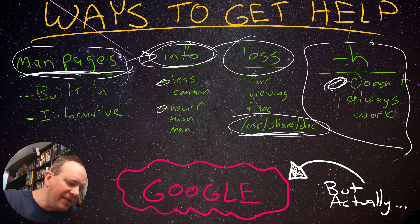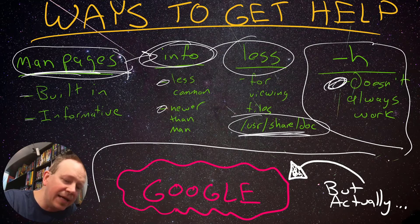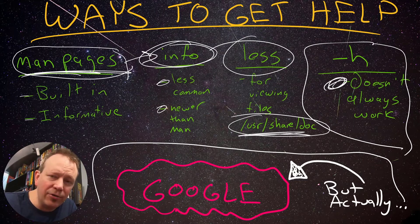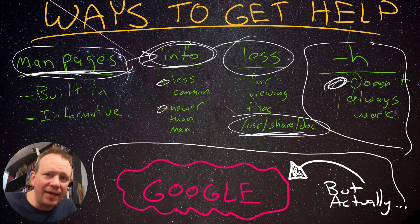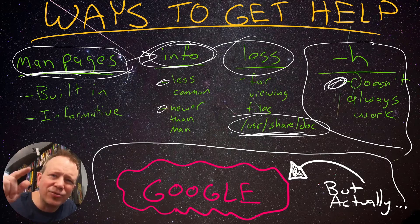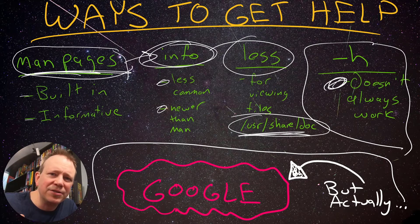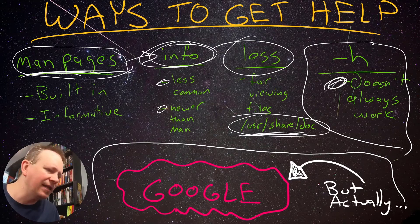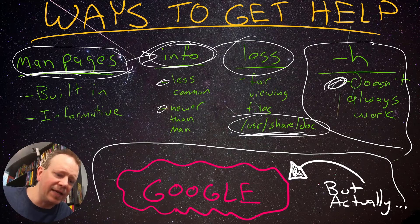That's generally the one I'll try first — something dash h. But in the end, like I mentioned at the very beginning, Google is probably where you're going to go for the most information, because even man pages are a pain to scroll through, whereas with a web browser it's just a web page. So anyway, let's go to the command line and check some things out.